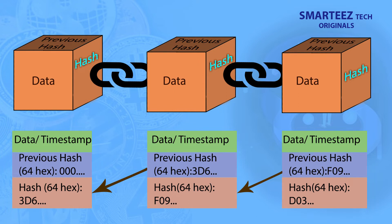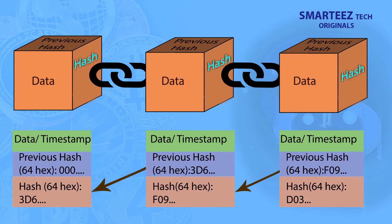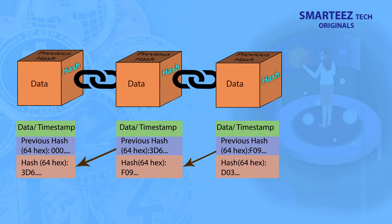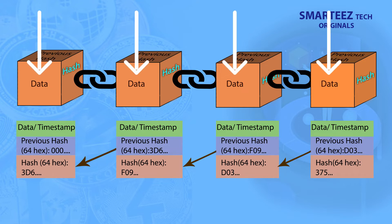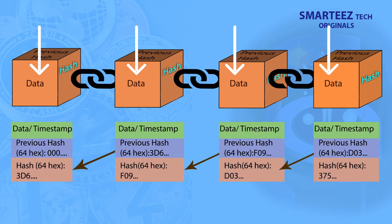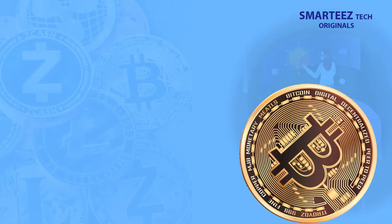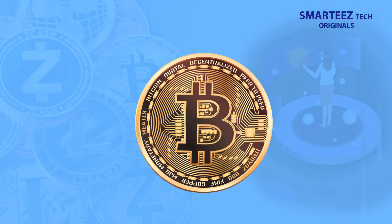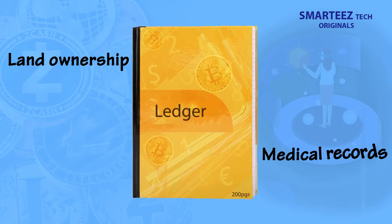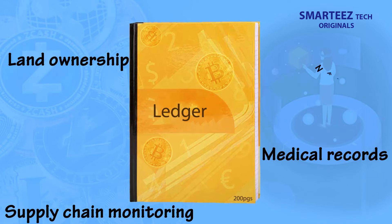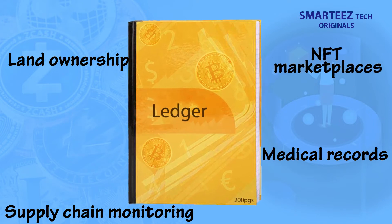Instead, whenever the data needs to be changed, a new block gets created and is added to the end of the blockchain. Blocks in a blockchain can be used to store any type of data, though it all started with storing and tracking financial transactions with Bitcoin. Now the data in a blockchain can be related to land ownership, medical records, supply chain monitoring, NFT marketplaces, and so on.